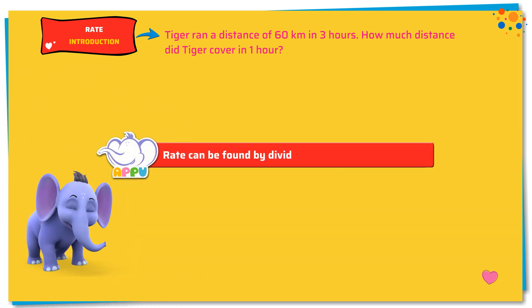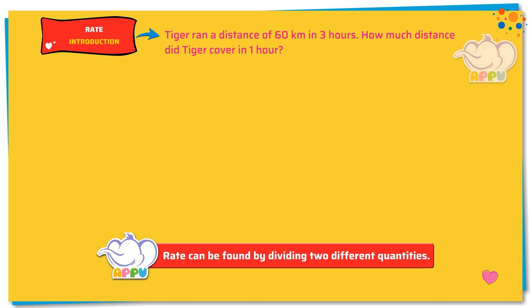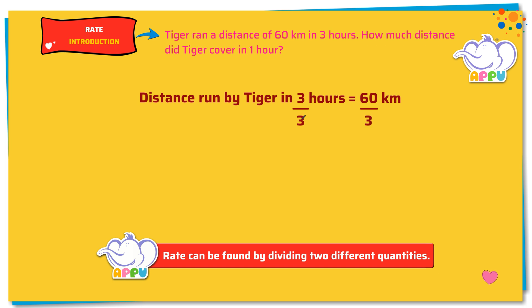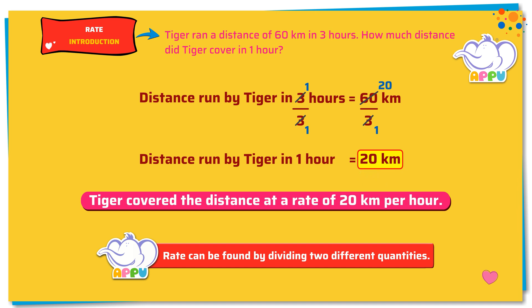Rate can be found by dividing two different quantities. Distance run by Tiger in 3 hours equals 60 kilometers. To find the distance run in 1 hour, we divide both sides by 3. So, distance run by Tiger in 1 hour is 60 kilometers divided by 3 hours. We get 20 kilometers per hour. Tiger covered the distance at a rate of 20 kilometers per hour.